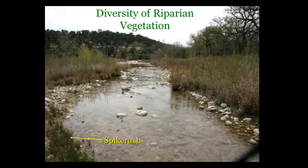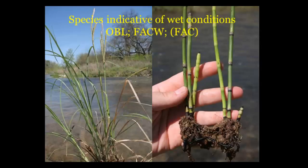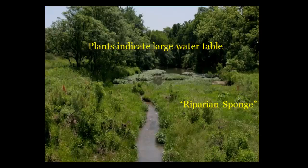Secondly, look for a diversity of vegetation. Normally a riparian area will be more stable and more functional when we have a variety of plant life, not just one or two species. Thirdly, look for plants that indicate we're storing water — specifically obligate and facultative wet species — which show us that we have a riparian sponge working underground.